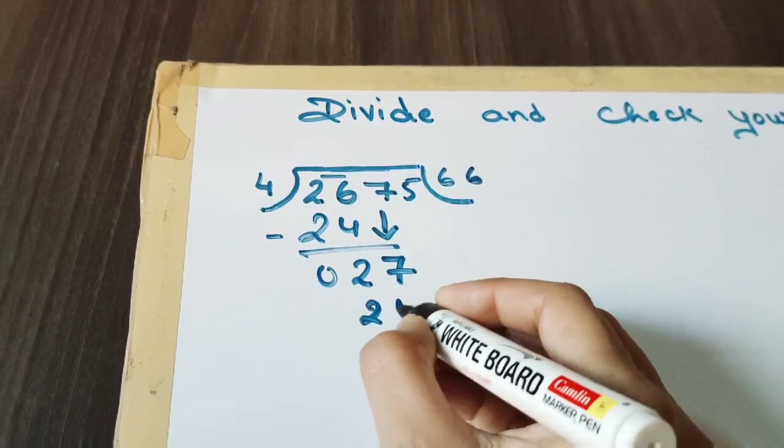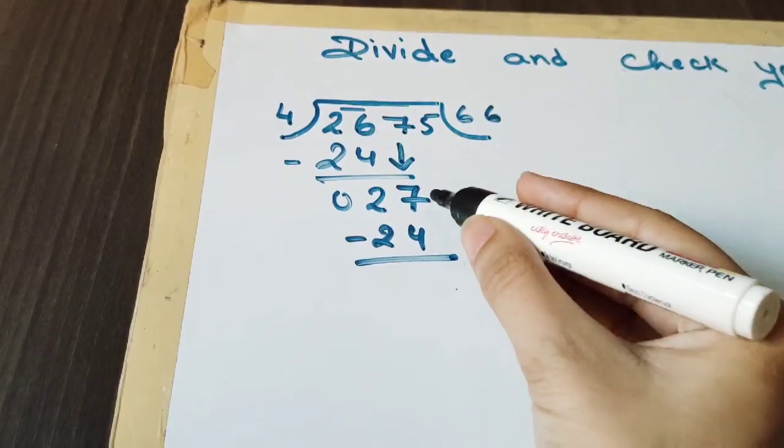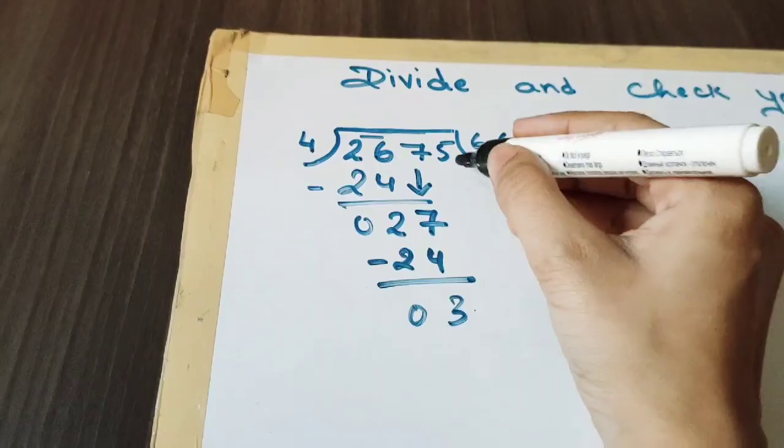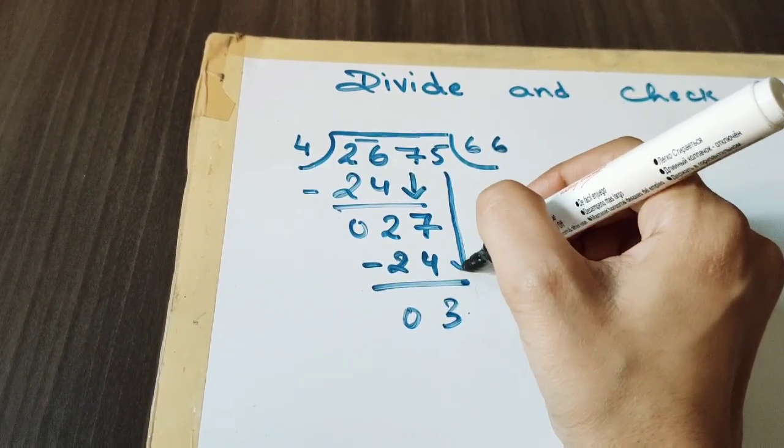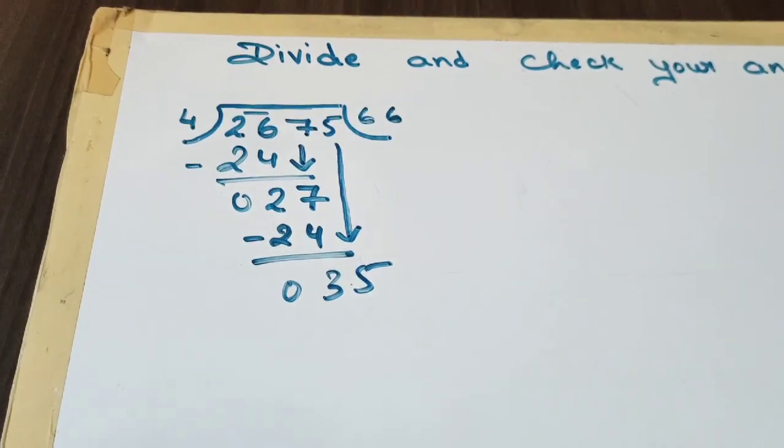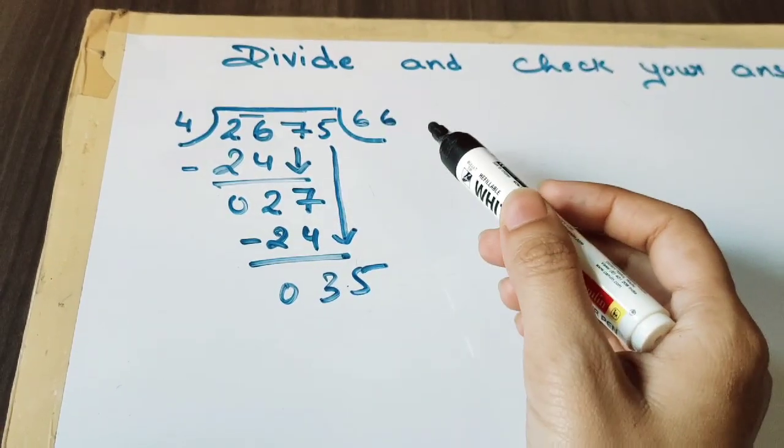Now again we will subtract: 7 minus 4 is 3 and 2 minus 2 is 0. Now another number is left here, we will write down 5. Now let's divide again 35. So 4 times 8 is 32.